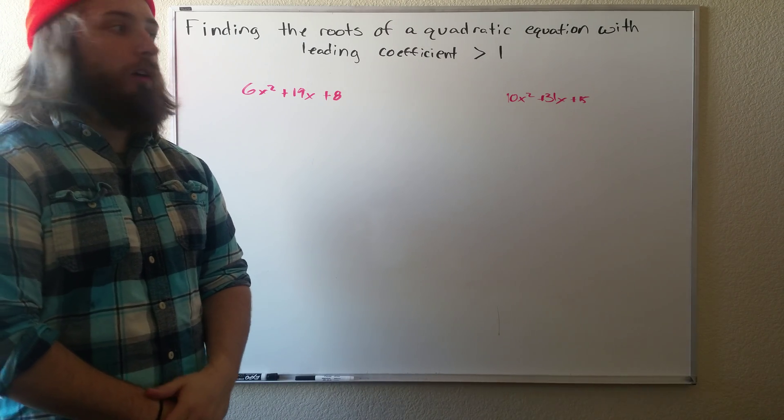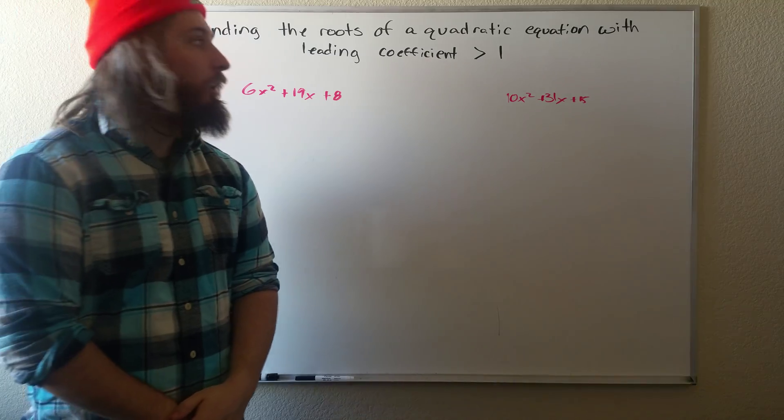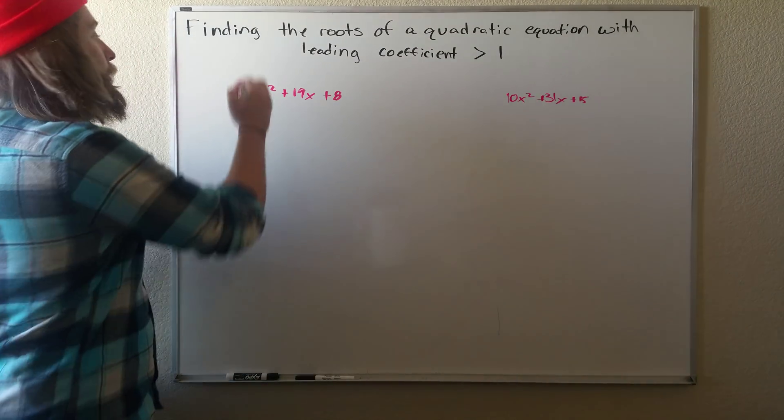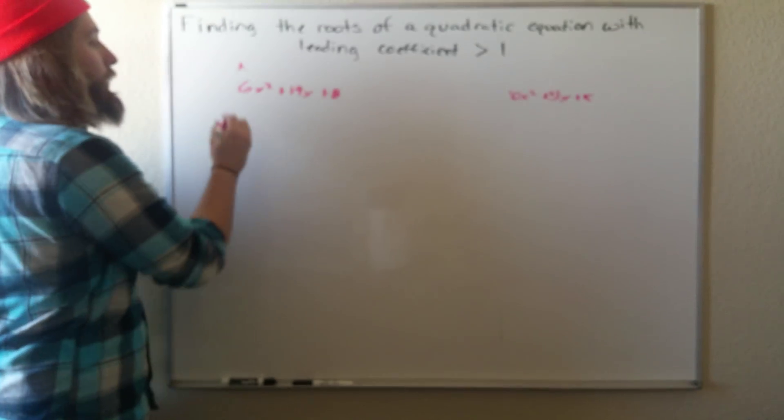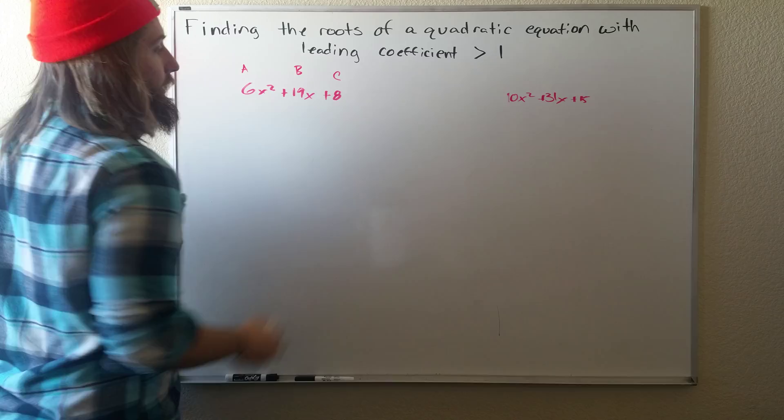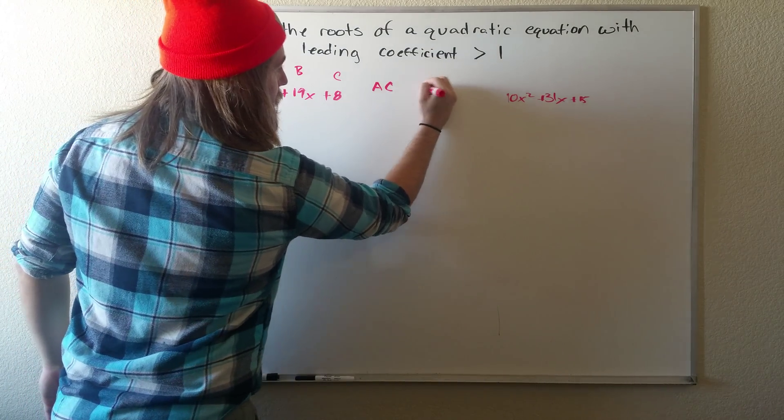So now we're finding the roots of a quadratic equation with leading coefficient greater than 1. And what we're going to do is use the ACB method again. So we know our A term is in front of the X squared, our B term is in front of the X, and our C term doesn't have a variable. So we have A, C, and B.